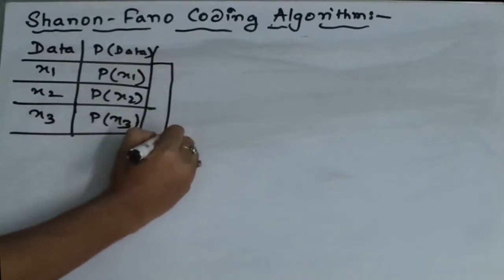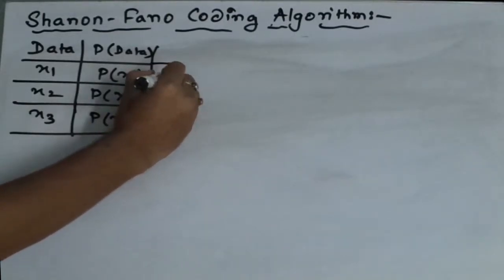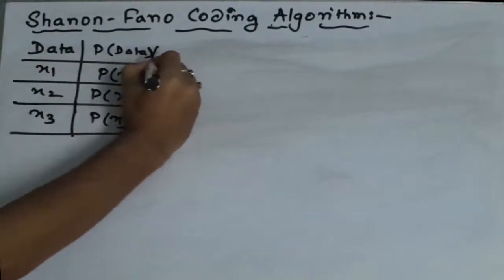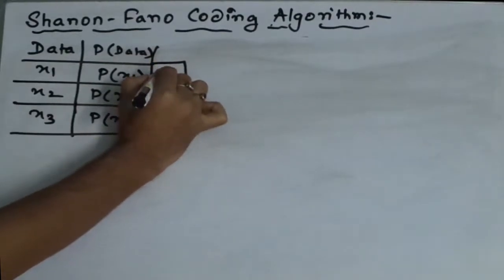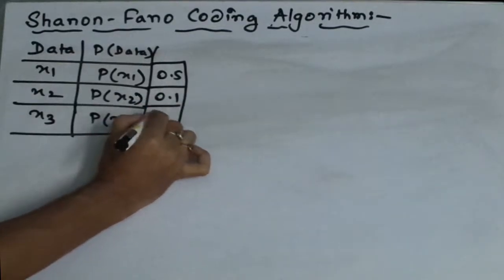Now say this has the p of x1 is 0.5. Sorry, writing it once more. This is 0.5, 0.1, and 0.4.